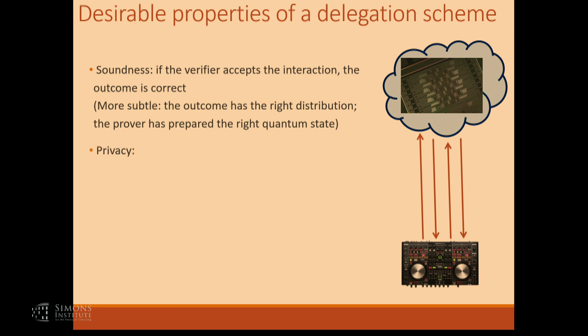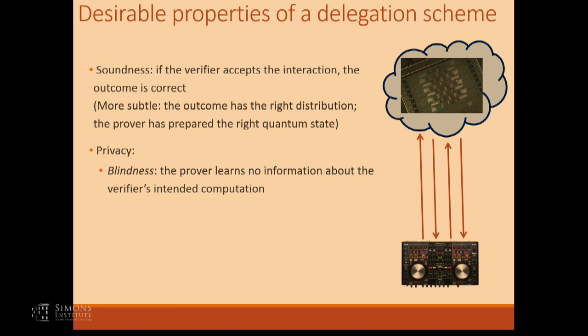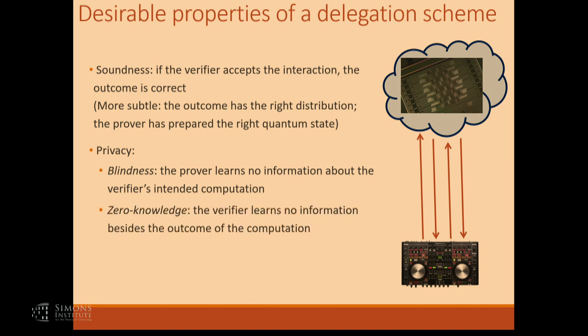Then there are privacy guarantees. The first one is generally referred to as blindness — designing the protocol so that the verifier does not give any information to the prover, to the quantum computer, about the computation it desires. And then the other one we'll focus on in the talk is the zero-knowledge property, which guarantees that the verifier does not learn anything about the computation other than the outcome itself.